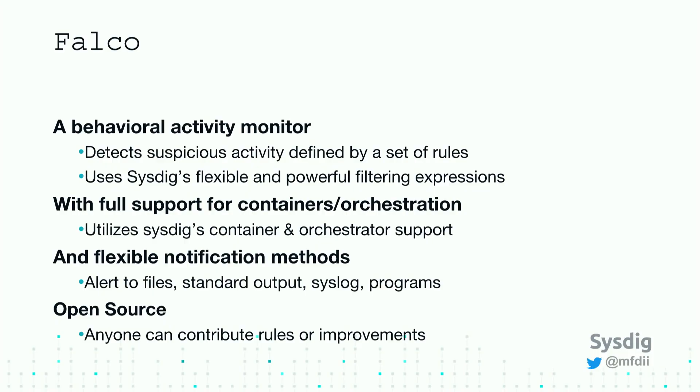When a rule is violated, you can alert to various locations — to file, standard out, syslog, or arbitrary programs. We're improving this to give you more destinations to push information to. A lot of companies use Falco as a mechanism where they log a lot of information, including rule violations that are more notices or informational. They use this to establish what they consider normal for their environment, and then aggregate it with other information if there is an incident.